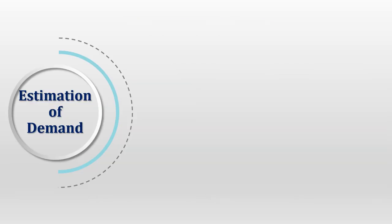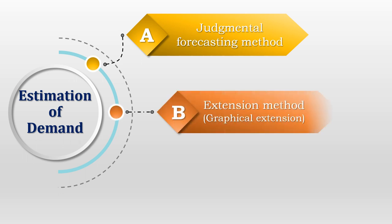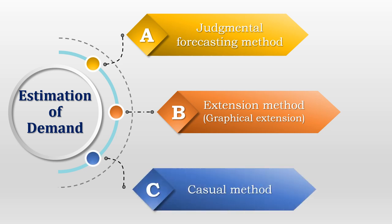Once the decision to manufacture inside the hospital has been taken, the question arises: how much to manufacture and when to manufacture. There are certain methods which help us estimate the demand for products inside the hospital. There are three different methods: the first is the judgmental forecasting method, the second is the extension method, also called graphical extension, and the third is the casual method.